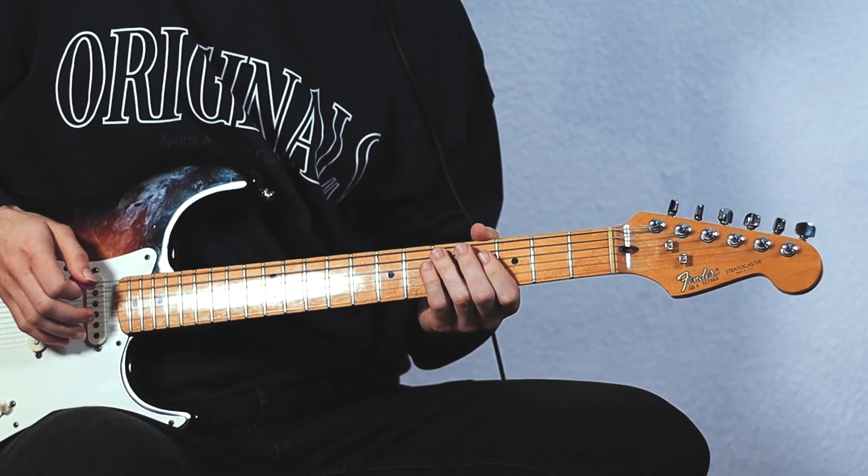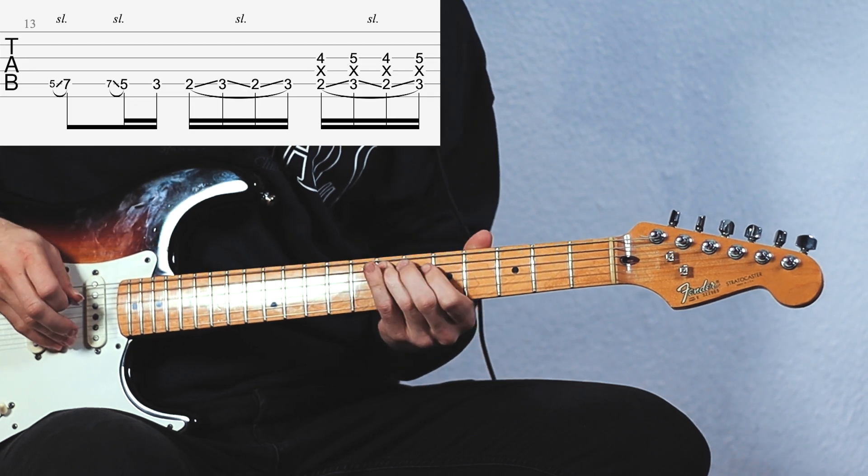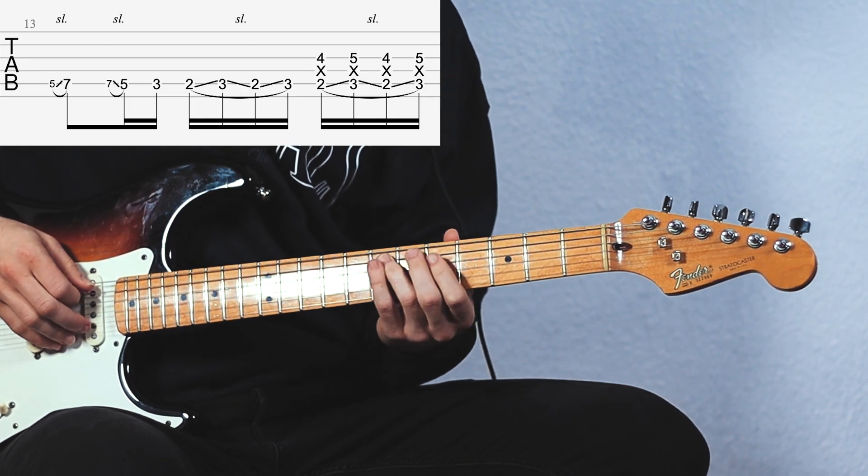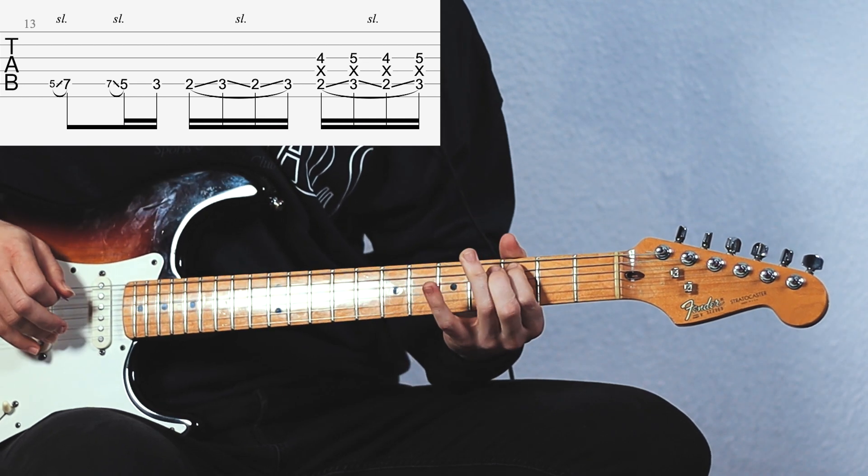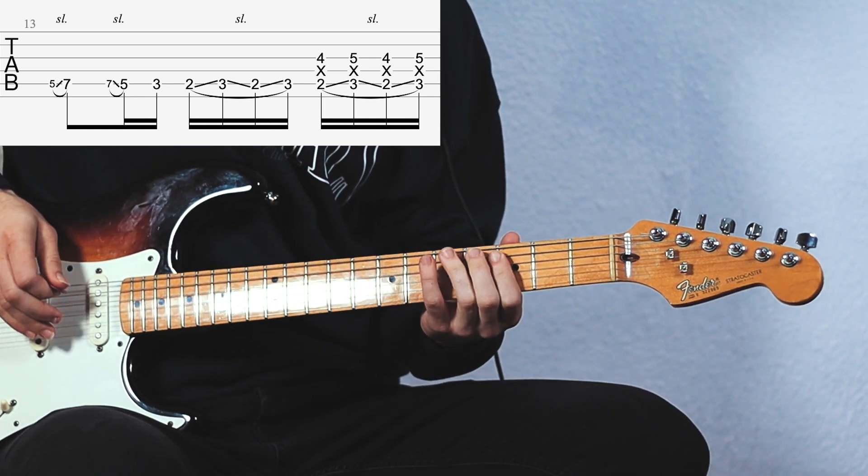Now he leads into the lick by playing the 5th fret of the A string, slides to the 7th fret, slides back, then plays the 3rd fret of the A string.